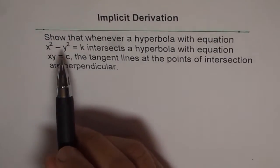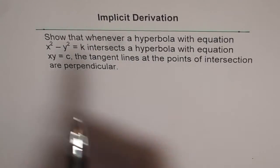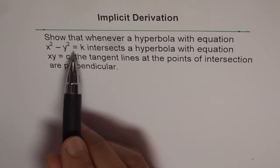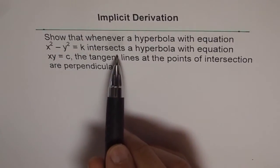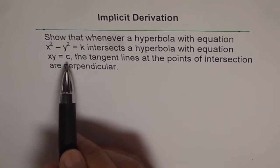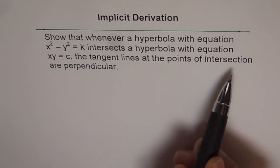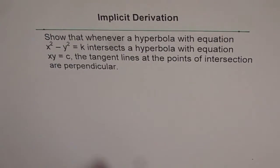Question is: show that whenever a hyperbola with equation x square minus y square equals k intersects a hyperbola with equation xy equals c, the tangent line at the points of intersection are perpendicular. Okay. Now let me show you the solution.